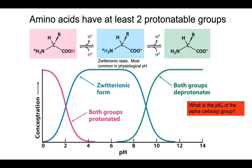If we graph this as concentration as a function of pH, we get an interesting picture. As both groups are protonated at low pH, but as you increase the pH, the alpha-carboxyl group becomes deprotonated and that species increases. As you keep increasing the pH, even the alpha-amino group becomes deprotonated, and the doubly deprotonated species increases.